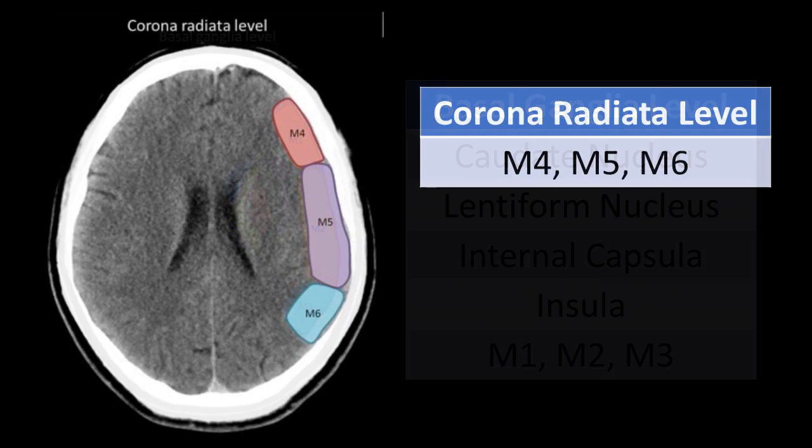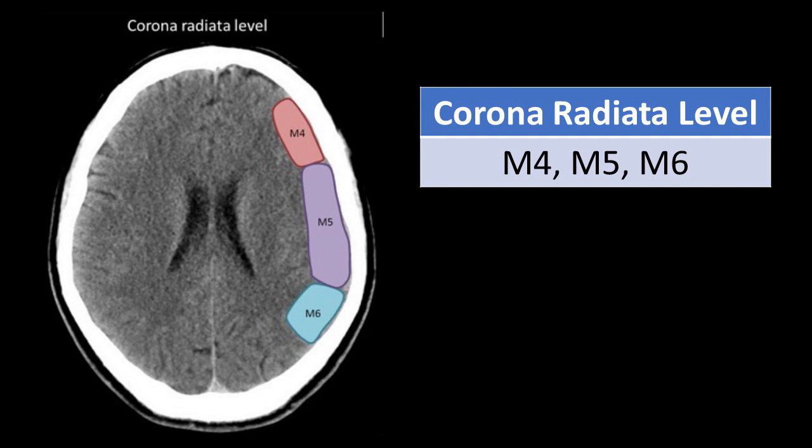Meanwhile, at the height of the corona radiata, there are three points from the ASPECTS score. M4 territory is the region of the anterior middle cerebral artery, just above territory M1. M5 territory is the lateral middle cerebral artery area, just above M2 territory. M6 territory is the region of the posterior middle cerebral artery, just above M3 territory.